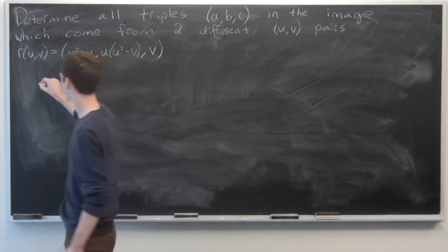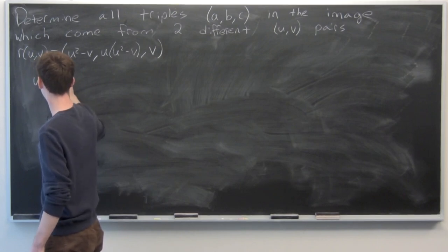So let's start by just taking u squared minus v.